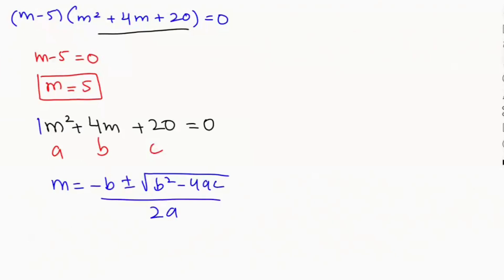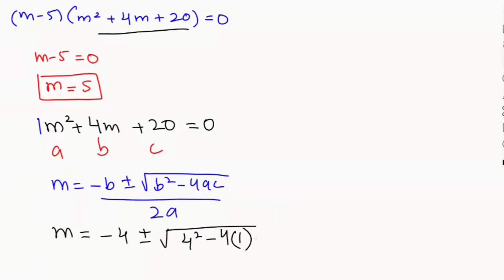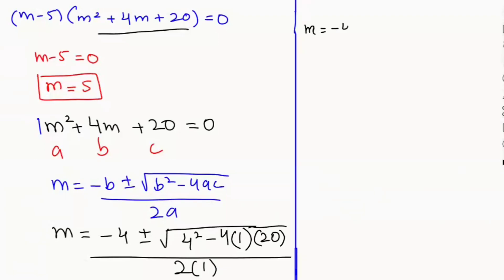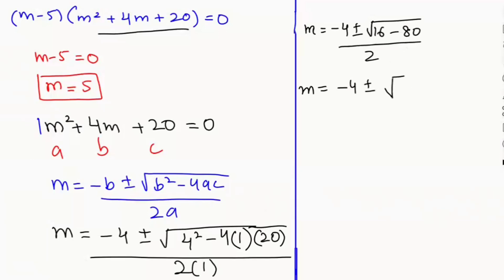The values are a equals 1, b equals 4, c equals 20. So m equals negative 4 plus or minus the square root of 4 squared minus 4 times 1 times 20, all over 2 times 1. This turns to m equals negative 4 plus or minus the square root of 16 minus 80, over 2. That gives m equals negative 4 plus or minus the square root of negative 64, over 2.